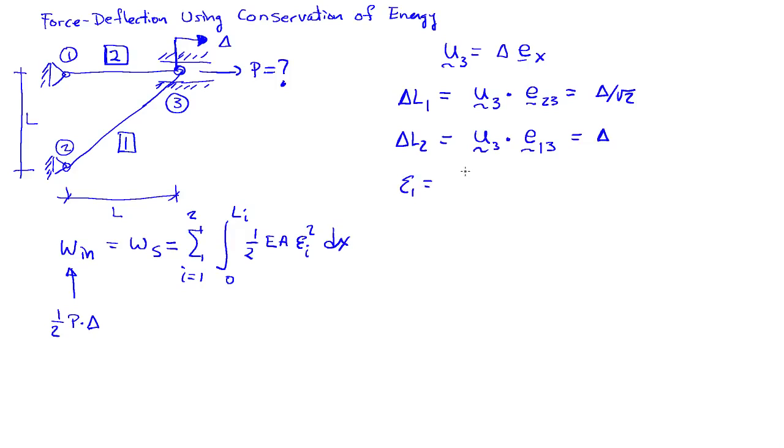This allows me to say what the strain in bar 1 is. That's delta L1 over L1. L1 is equal to the square root of 2 times L. We can divide this by delta over the square root of 2, so this becomes delta over 2L. The strain in bar 2 is delta L2 over L2. So that's going to be equal to,